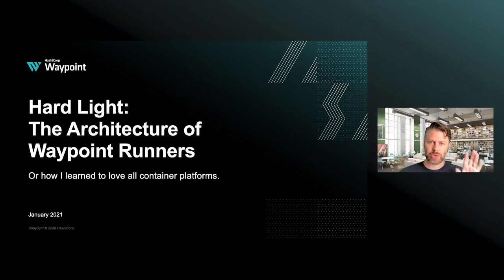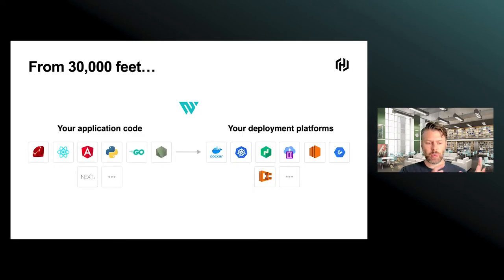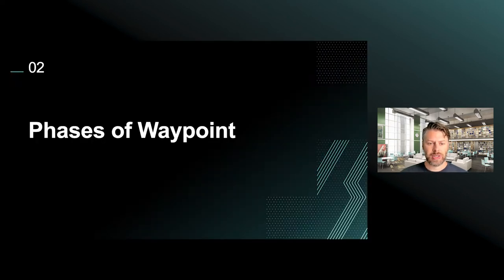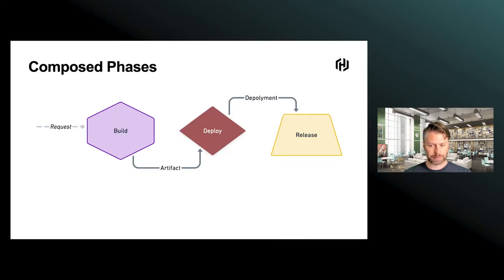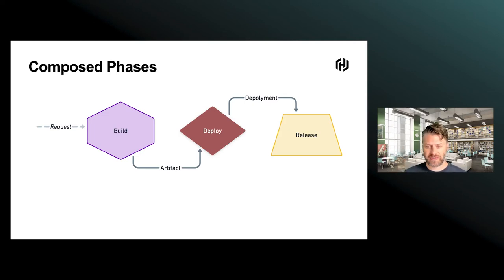First, let's do a quick intro. What is Waypoint? There's been a few presentations on this before, so I'm going to do this fairly briefly. Waypoint is the idea of how do you take what you have in your code base — whatever language it is — and how do you get it to your deployment platform. Specifically, within Waypoint there are a few different phases: you request a build, that build generates an artifact, which gets used by the deploy phase, and then the deploy phase gives a deployment over to the release phase.